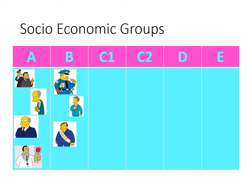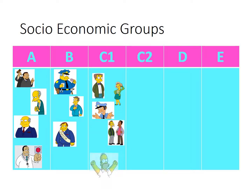Next we have C1 — skilled, non-manual. There we have Smithers, Homer's PA. There's also Mrs. Krabappel the teacher — very hard to find her without smoking when you Google her. We have Carl and Lenny. I think that's slightly off actually, because I recall in one episode one of them got promoted to be the boss. And then there's Homer — his job is head of safety. So is that managerial, or is that skilled non-manual?